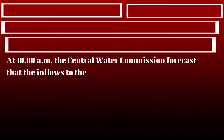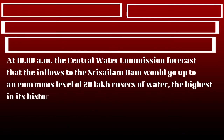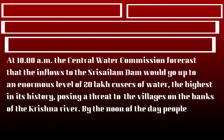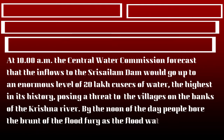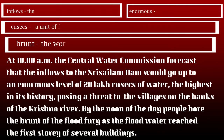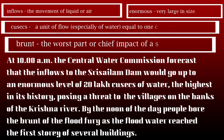At 10 a.m., the Central Water Commission forecast that the inflows to the Sri Salam Dam would go up to an enormous level of 20 lakh cusecs of water — the highest in its history — posing a threat to the villages on the banks of the Krishna River. By noon, people bore the brunt of the flood fury as the flood water reached the first storey of several buildings. Inflows means the movement of liquid into a place. Enormous means very large in size or quantity. Cusec is a unit of flow of water. Brunt means the worst part or chief impact.